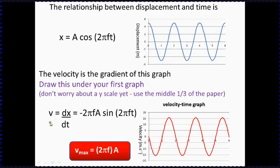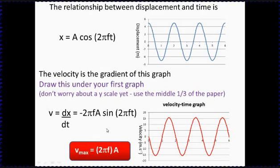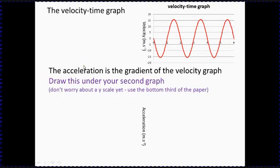What we need is to work out the maximum value that v can have. The equation on your data sheet gives this maximum value. Looking at the equation, the maximum value that sine can have is 1, regardless of what's inside the bracket. So the biggest value this expression can reach is 2πfA — the minus just indicates direction. Therefore, the maximum velocity is 2πf times the amplitude, occurring at the centre of the oscillation where the object is moving fastest.